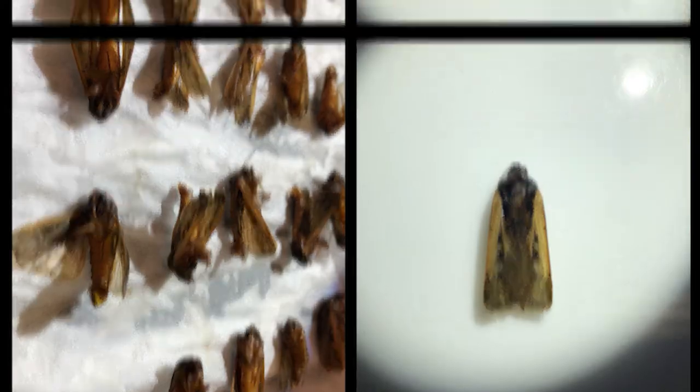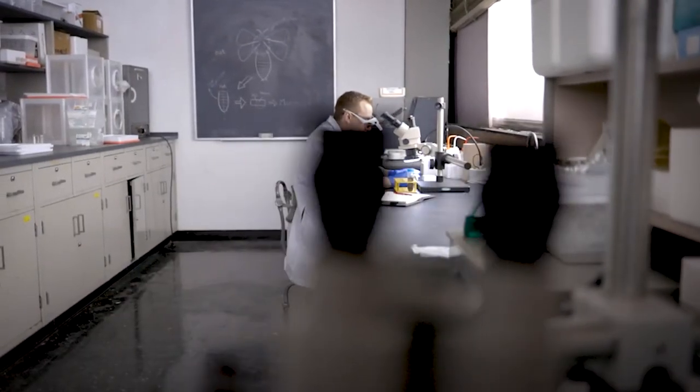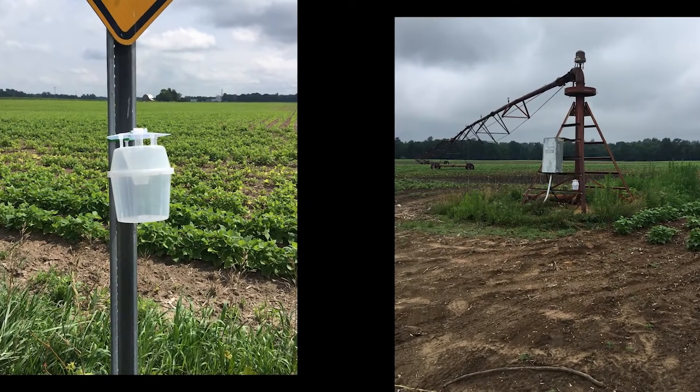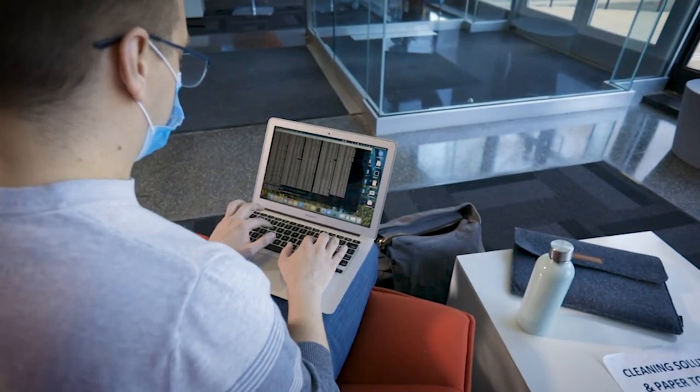We're looking at ways to better understand the moth so it can be integrated into pest control later on. The first thing we did was figure out how the population is structured. We looked at the adult moths and determined if they developed on dry beans or corn based on their carbon isotope ratios.